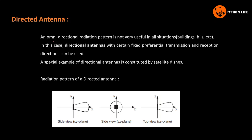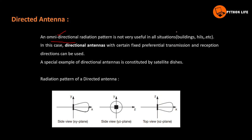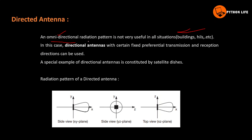After the simple dipole we have the directional antenna. An omnidirectional radiation pattern is not very useful in all situations — like buildings, hills, etc. So here we have directionality. Fixed preferential transmission and reception directions can be used. This is a directional antenna. A special example of directional antenna is constituted by satellite dishes.